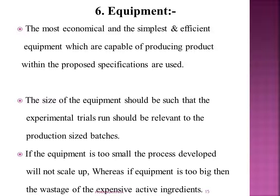The sixth consideration is equipment. The most economical, simplest, and efficient equipment capable of producing the product should be used. Regarding equipment size, it should be such that experimental trials are relevant to the production size. For example, if the equipment size is too small, the process developed will not scale up, whereas if the equipment size is too big, there is wastage of expensive active ingredient. Therefore, equipment size should be relevant to the production batch size.